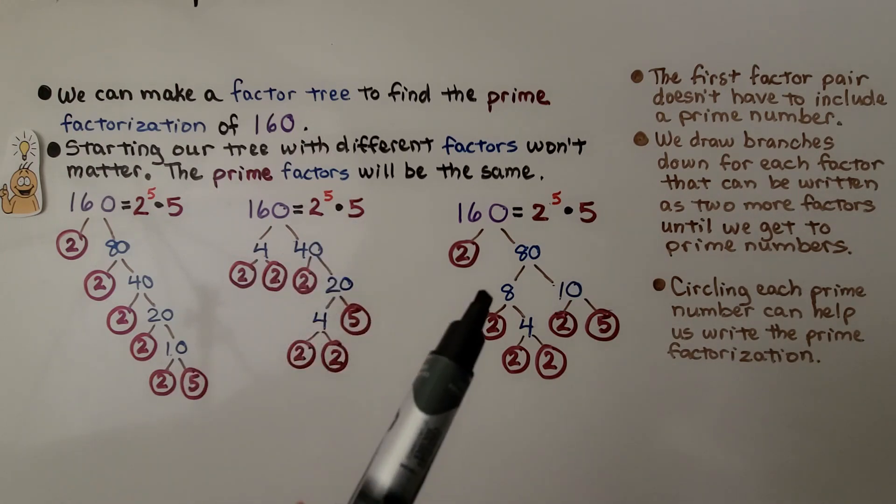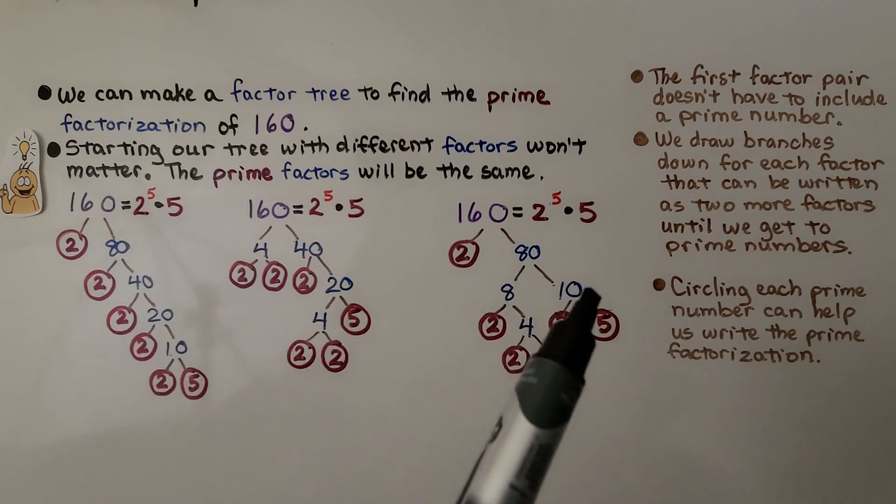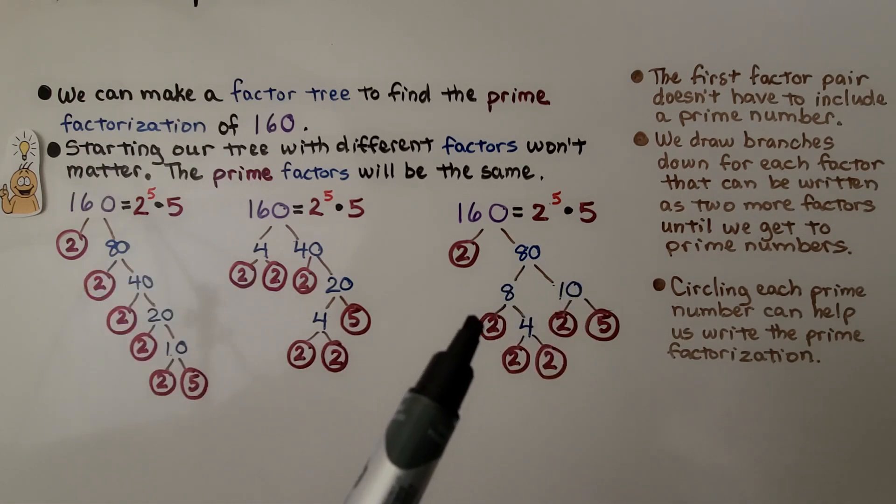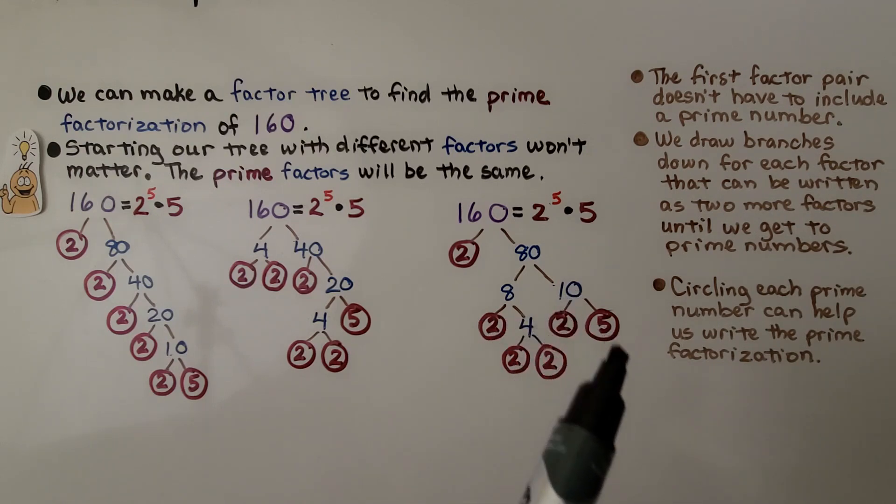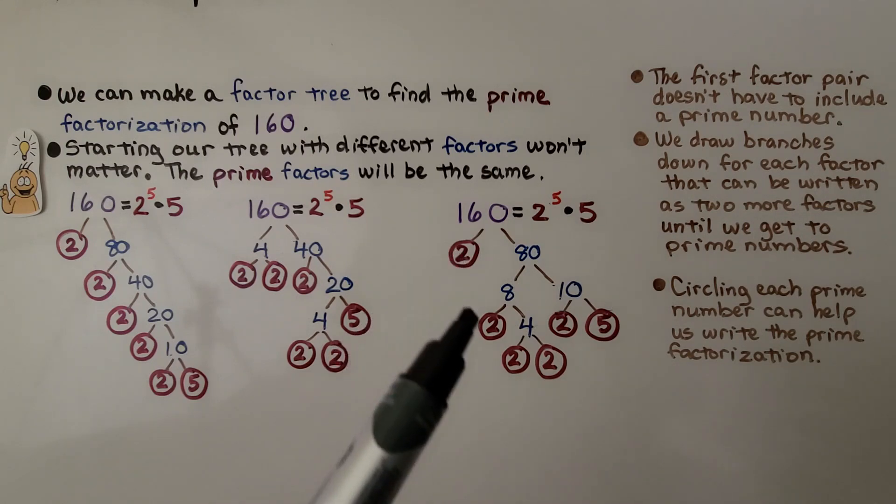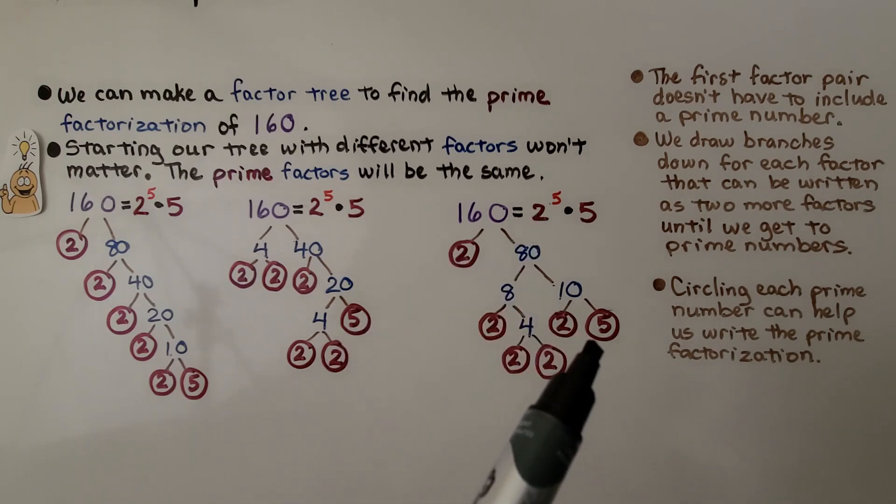And even if we did it this way and split the 80, instead of doing 2 times 40, we could do 8 times 10. We're going to split the 8 into a 2 times 4, and the 4 into a 2 times 2, and the 10 into a 2 times 5. Again, we have 1, 2, 3, 4, 5 2's, and 1, 5.